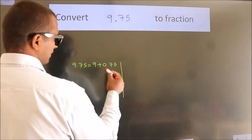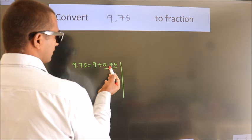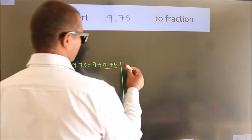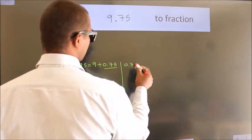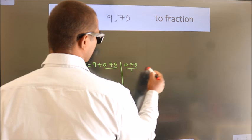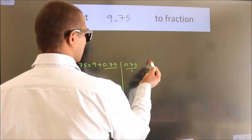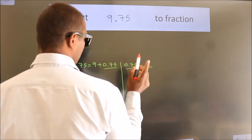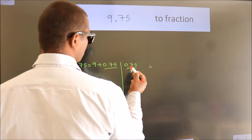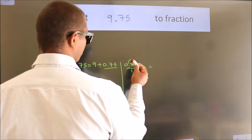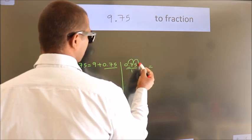Next convert this to fraction. So 0.75. To convert this to fraction, we have to move this decimal after 1, 2 numbers.